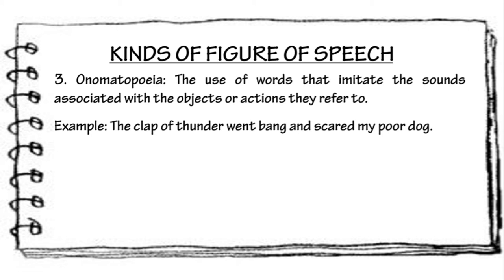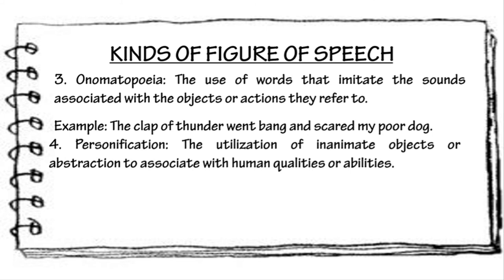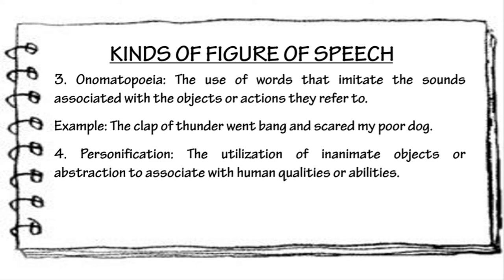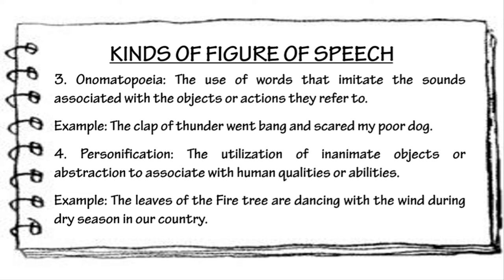The fourth kind of figure of speech is personification. Personification is the utilization of inanimate objects or abstraction to associate with human qualities or abilities. Personification is a common form of metaphor where human characteristics are attributed to non-human things. Example: The leaves of the fire tree are dancing with the wind during dry season in our country. We use the word 'dancing' to describe the characteristics of the leaves of the fire tree.